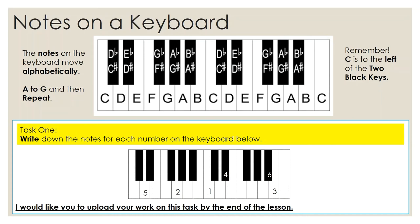And you can see to get to the next C, again, it's to the left of the two black keys. Make sure it's the two black keys, not the three, because the three black keys, the left of the three black keys, as you can see, is F. So make sure you can identify the two black keys, not the three.